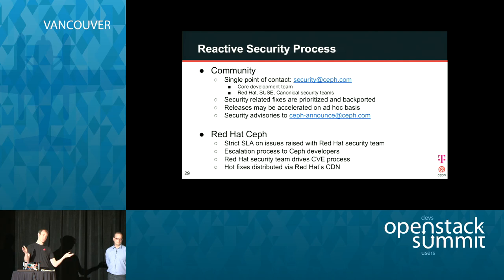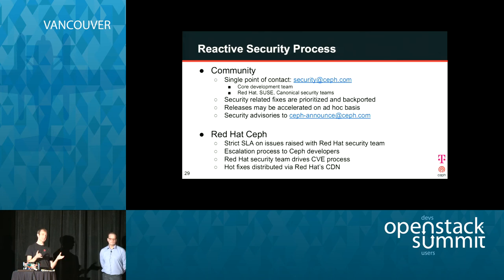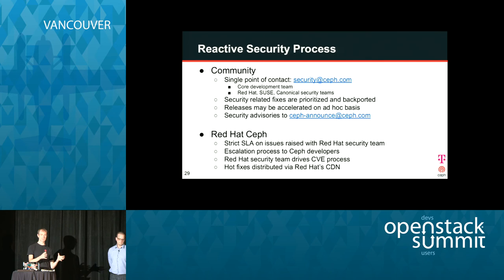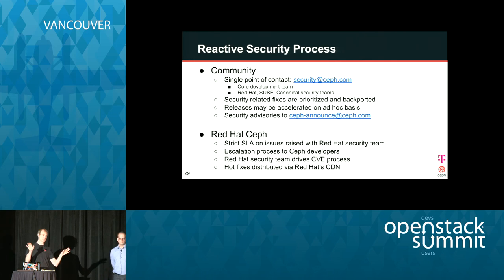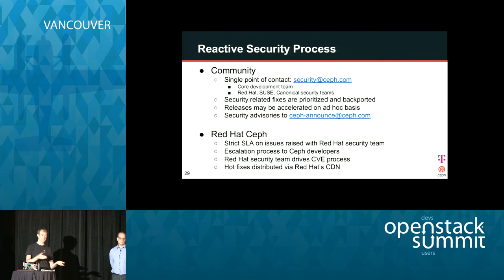Those are all preemptive measures. Assuming there actually is a breach, how do you deal with it? This year we created a new email alias, security@ceph.com, where reports about security flaws in Ceph can go. It goes to a restricted set of Ceph developers and copies all the distribution security lists from Red Hat, Canonical, and SUSE so they can start their processes. As a community, we prioritize security backports and fixes and push out releases as needed, and we can send announcements to public lists.